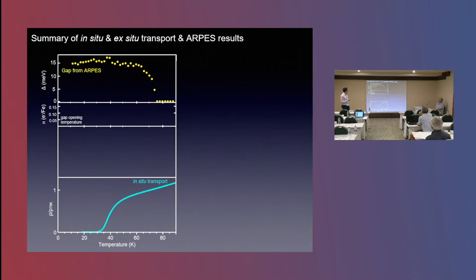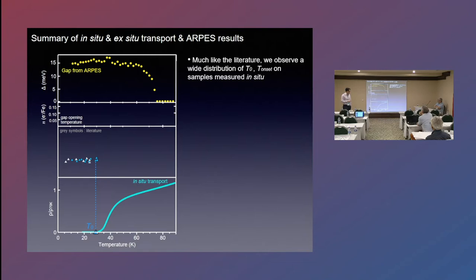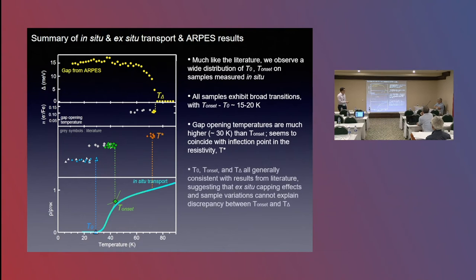Obviously there were quite a bit of sample to sample variations in these materials, so we wanted to measure a large number of samples. Here are T naughts, the temperatures in which the resistivity goes to zero. The blue are our samples, the gray are other stuff that we extracted from the literature. Onset temperatures here. You can see they're quite consistent, but they're still substantially lower than the gap closing temperatures. And interestingly, this T star seems to be very consistent with the gap closing temperatures.